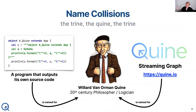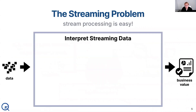Our system, Quine the streaming graph, is named after Quine the logician in the same way that a computer program that outputs its own source code is named after that same philosopher and logician. The problem that we seek to address with Quine the streaming graph is really about how to take data and turn it into business value.